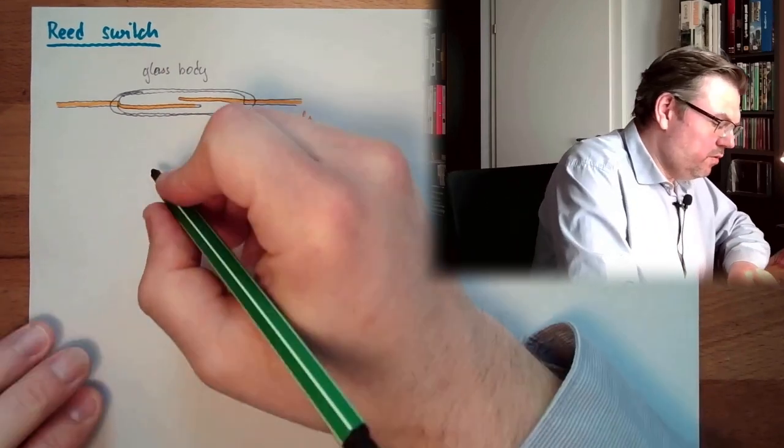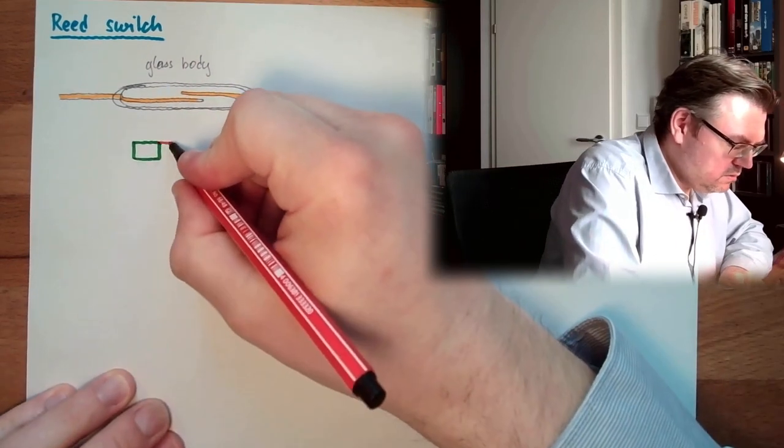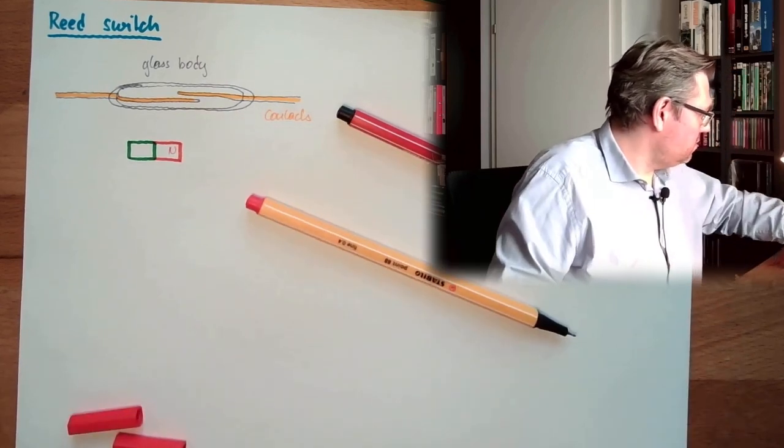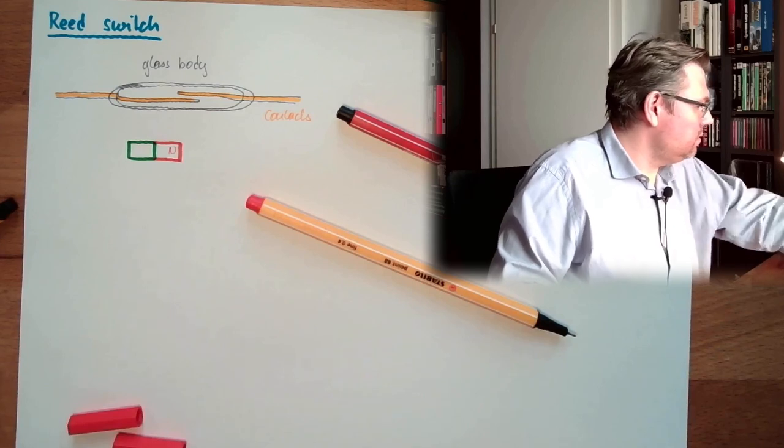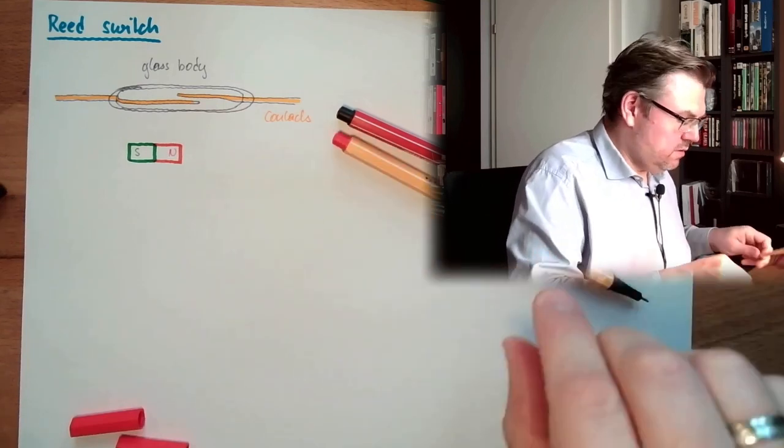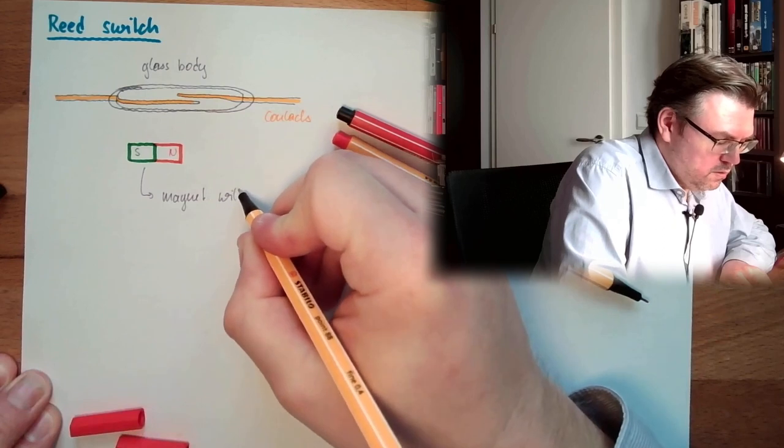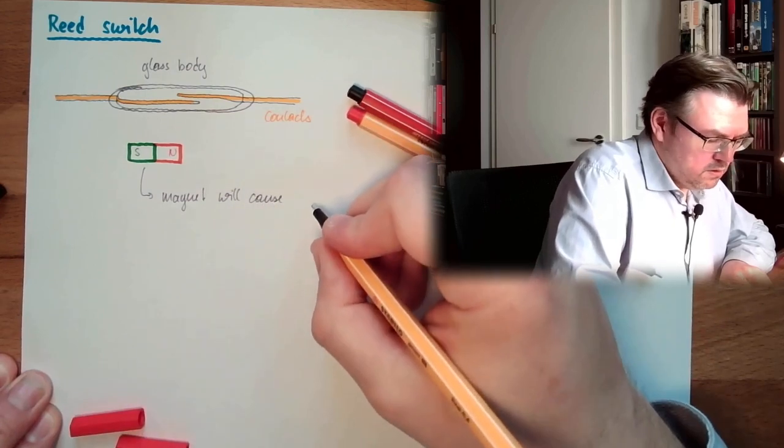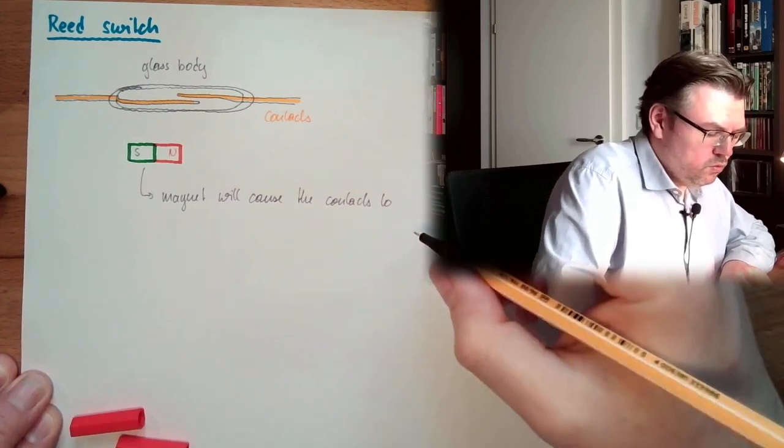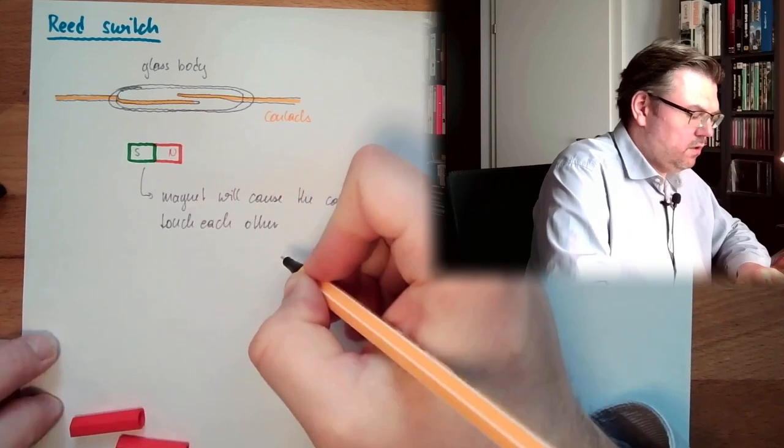And it's reacting to magnets. If we have somewhere a magnet close, so we have some north pole, we have some south pole. Green color still missing. Then those two will switch. Magnet will cause the contacts to touch each other.